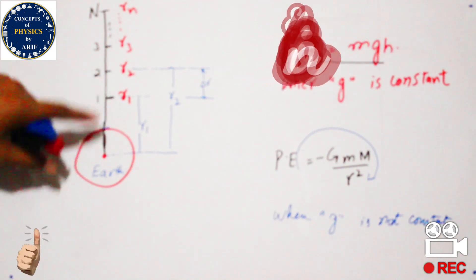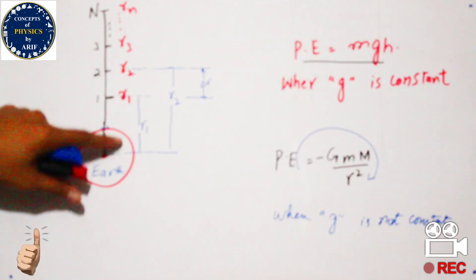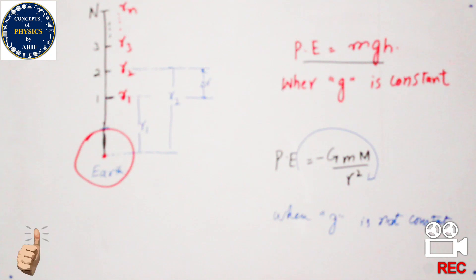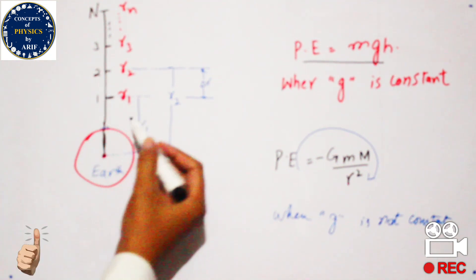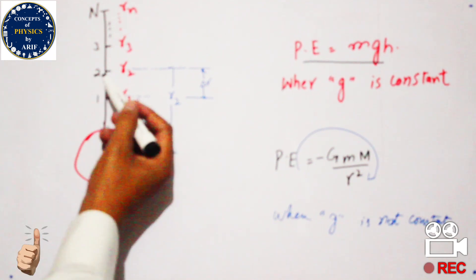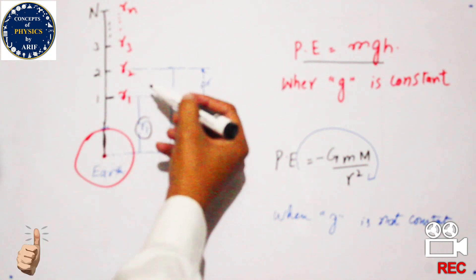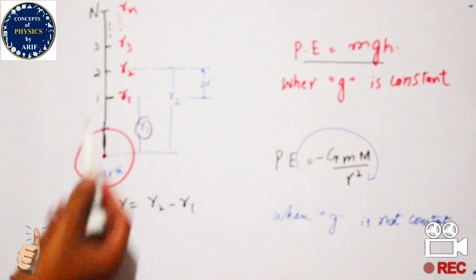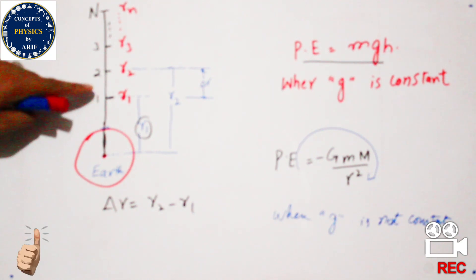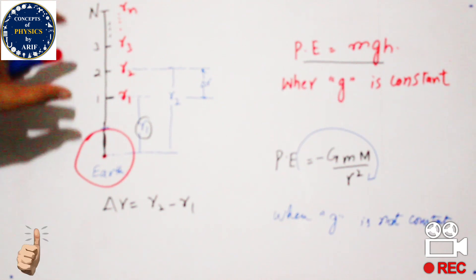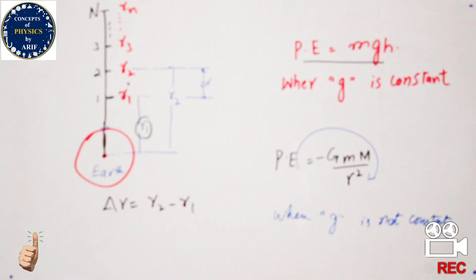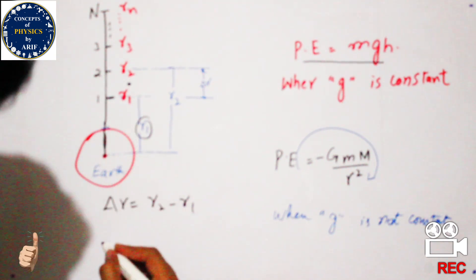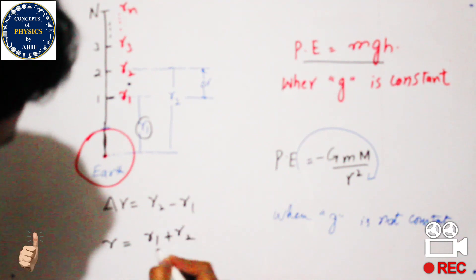We divide the travel into equal small distances from the center of the Earth. Point 1 is at distance r1 from the center, point 2 is at distance r2, and so on up to rn. The difference between two points is known as delta r, equal to r2 minus r1, since r2 is the larger quantity. The purpose of splitting into small intervals is that within each small region, the gravitational force remains approximately the same.